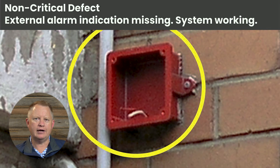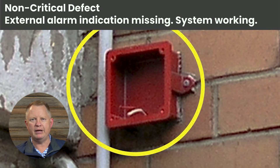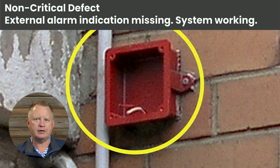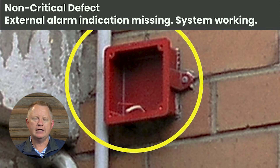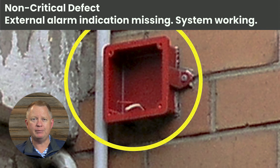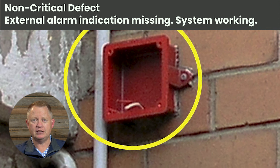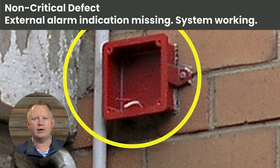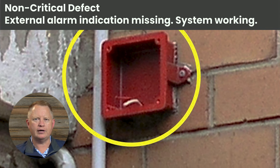This is an external warning device or external bell. I'd call this a non-critical defect because the rest of the fire alarm system would still operate. This would be contentious for some people, but in my perspective it's a non-critical defect because the operation of the fire systems within the building would still function correctly.